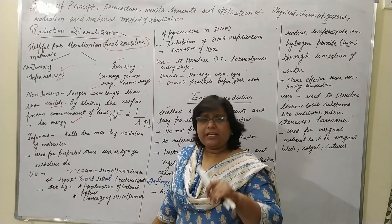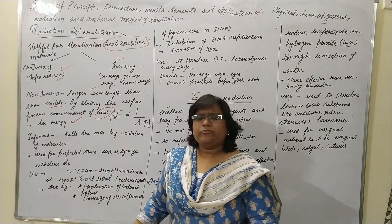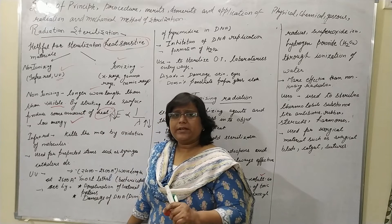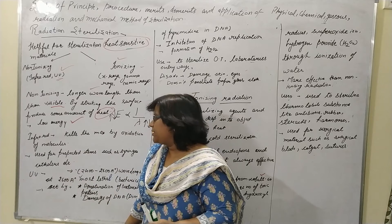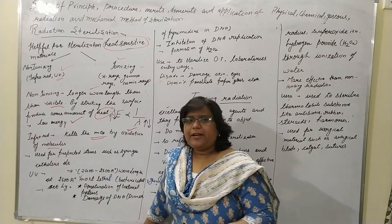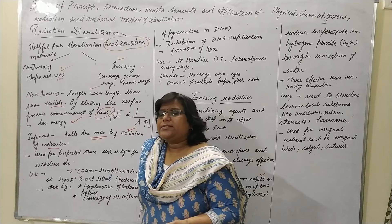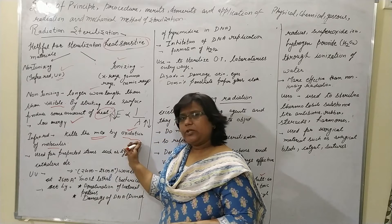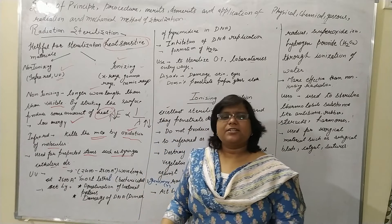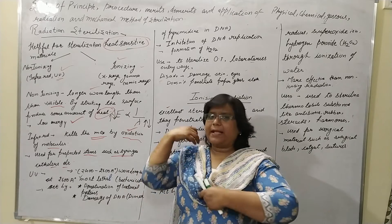When non-ionizing radiations strike a surface they produce heat — this is something of a drawback. In non-ionizing radiations there are two main types: infrared and ultraviolet. In infrared, they kill the microorganism by oxidation of molecules. They are used for pre-packed items such as syringes, catheters, and surgical items which are previously packed, as infrared is able to penetrate these packings.